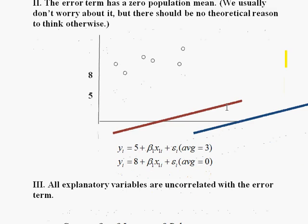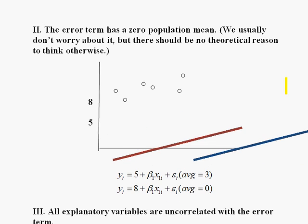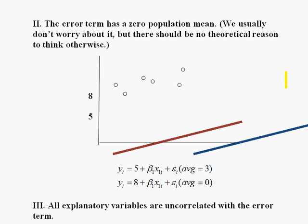Now let's look at the next assumption of the classical model, that has to be true in order for ordinary least squares to be the best method to use. This next assumption says that the residual — that error term — has to have a zero population mean. This is one of the least discussed assumptions of the model, so let me try to show you what it means, what it would mean if it wasn't true, and why we don't talk about it very much.